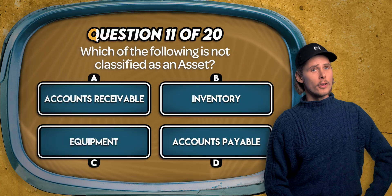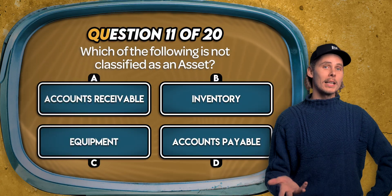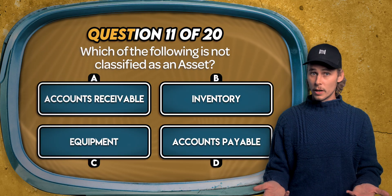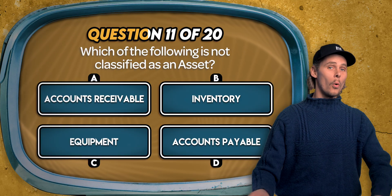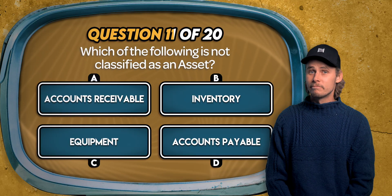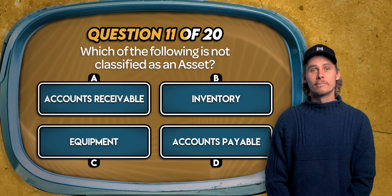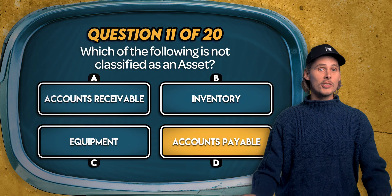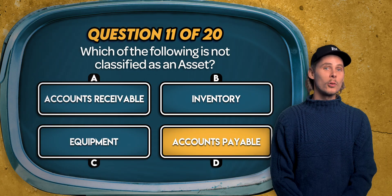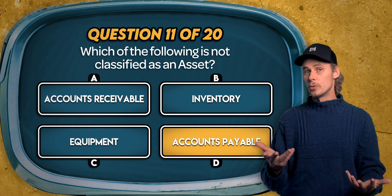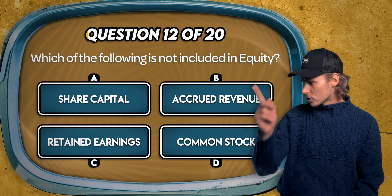Question 11. Which of the following is not classified as an asset? The answer is D: accounts payable is a type of liability. It represents what a business owes to its suppliers.